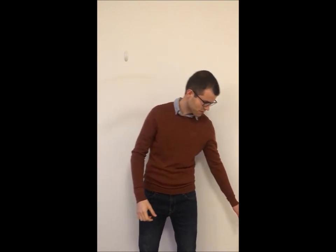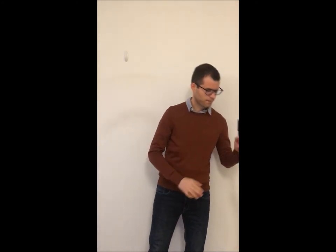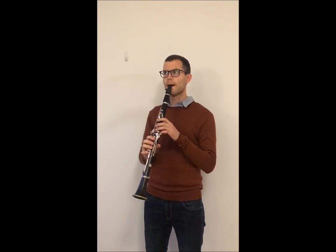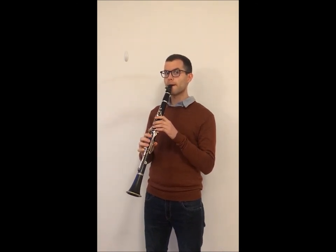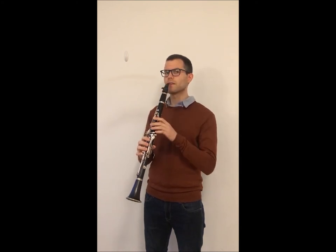Okay great, now let's put all this on the clarinet. So first step, fold the lower lip like this, then say ee and make sure your top teeth are on the top of the mouthpiece.